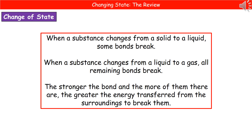In terms of how this impacts the properties of our actual substances, we need to know about the bonds that are present. Because the stronger the bond and the more of them there are, the greater the energy will need to be transferred from the surroundings to our substance in order to break them. So if you've got a lot of very strong bonds present, you need a large amount of energy to be transferred from the surroundings to break those bonds. Therefore, it will take a greater amount of energy, so it has a higher melting point and boiling point.